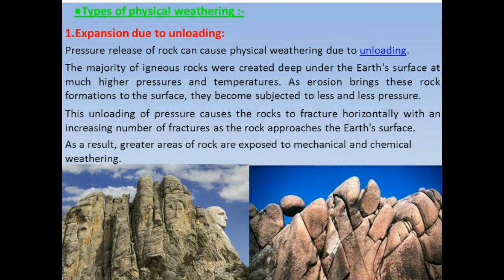Now let's go through some different kinds of physical weathering. Number one, we have unloading and expansion. When you look at a huge chunk of rock, probably the size of a smaller mountain, on the top of it there will be soil. This layer faces continuous erosion as it is exposed to water from rain as well as wind activity and gets eroded or removed with time. However, this top layer exerts pressure on the underlying rock and due to that the underlying rocks get fractured into sheets. So this is the process of physical weathering.